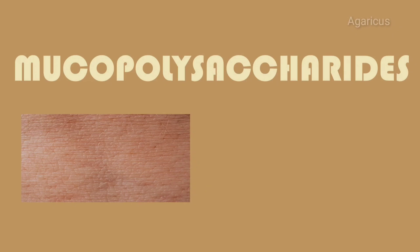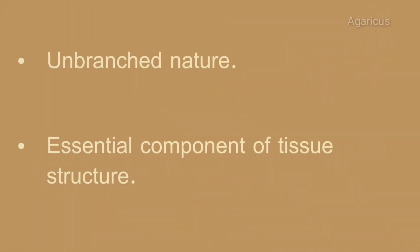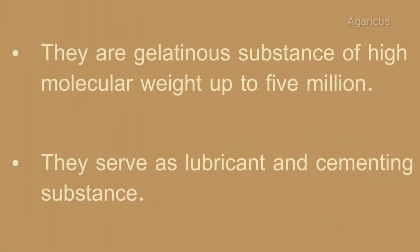Welcome back to our channel. Today we are discussing mucopolysaccharides, more commonly known as glycosaminoglycans, or GAGs. They are heteropolysaccharides that show an unbranched nature and are an essential component of tissue structure, meaning they act as structural supporting material.